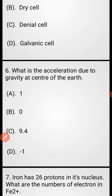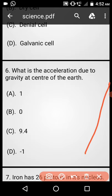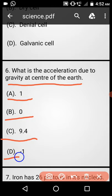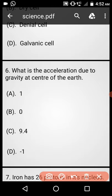Question 6: What is the acceleration due to gravity at center of the earth? Option A: 1, Option B: 0, Option C: 9.4, Option D: -1. Answer is Option D minus 1... answer is Option B, 0.